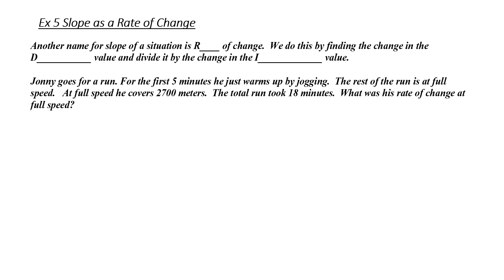Example 5. Slope as a rate of change. Another name for slope of a situation is called the rate of change. We do this by finding the change in the dependent value and divide it by the change in the independent value. Johnny goes for a run. For the first 5 minutes, he just warms up by jogging. The rest of the run is at full speed. At full speed, he covers 2700 meters. The total run took 18 minutes. What was his rate of change at full speed? My first step is to identify my dependent and my independent value.